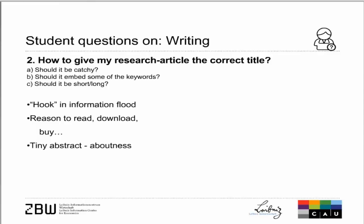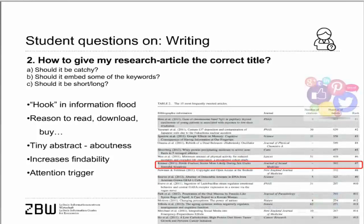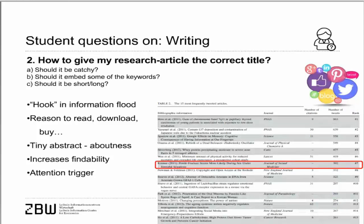The title of an article is like a hook in the information flood. It's what people read when they search, and how they decide whether they want to read the paper. It's worthwhile to think carefully about how to construct the title. Think about the aboutness of the paper — I like to think of the title as a tiny abstract. It increases findability and acts as an attention trigger. A catchy title can generate significant attention on social media platforms.